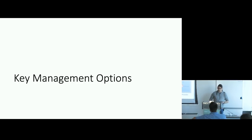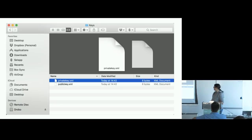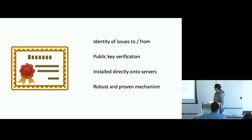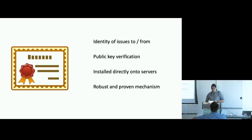Moving on to key management — there are lots of different options. Probably the worst is storing RSA keys in an XML file on a server somewhere. I've worked for two companies that have done this — you turn up on the first day and ask where they store their keys, and the answer is a D drive on some server. That's not good because anyone in the organisation can potentially access it. Another very common method is certificates — they're well known, easy to use, give details about who the certificate is issued to and from, allow public key verification, and can be installed directly onto servers or Windows key stores.